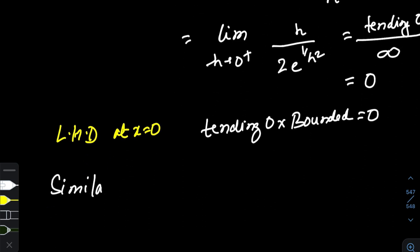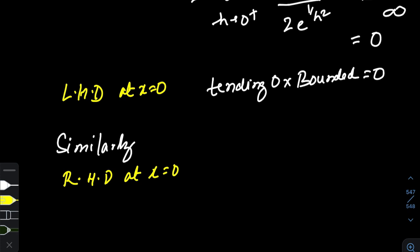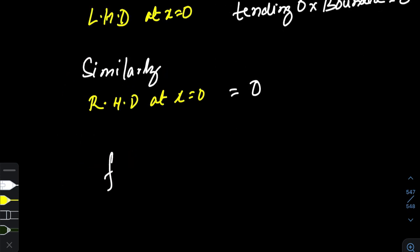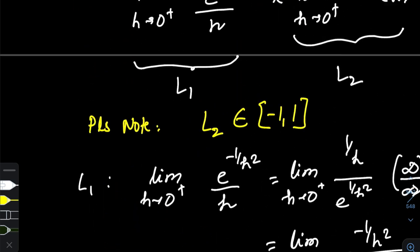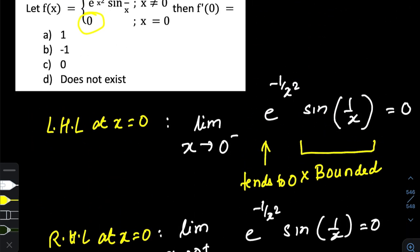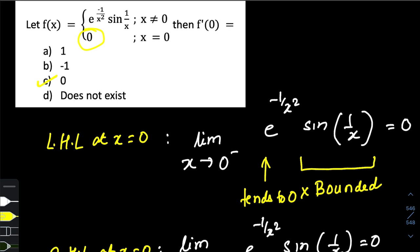So the entire left-hand derivative is L1 times L2 — something tending to zero times a bounded value — which equals zero. In a similar way, the right-hand derivative at x equal to zero also comes out to zero. Since left-hand derivative equals right-hand derivative equals zero, the derivative of the function at x equal to zero is zero. So option number C is the correct answer. I hope you learned the use of first principles to evaluate the derivative — many students try the direct method, but it doesn't work as smoothly here. Thank you for watching, please like, subscribe, and comment.